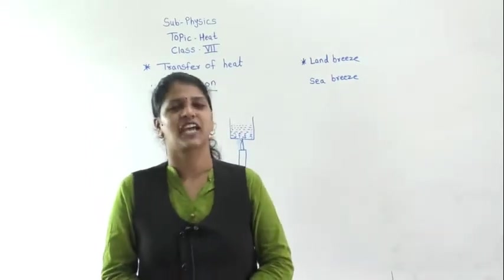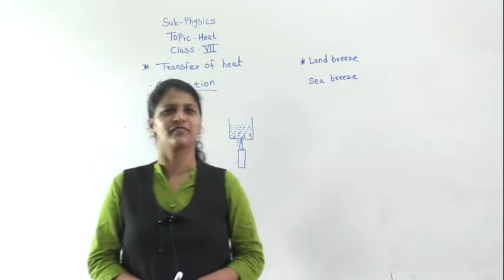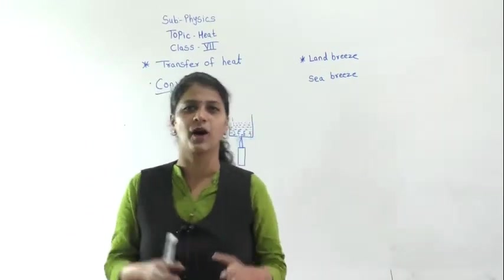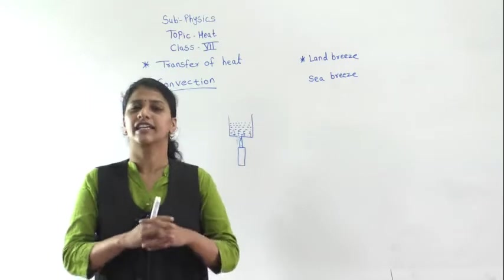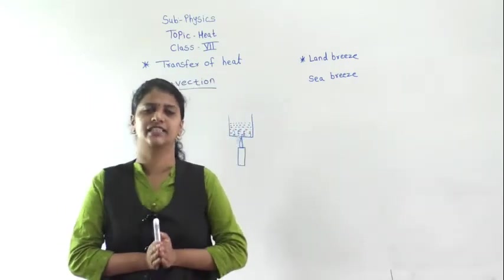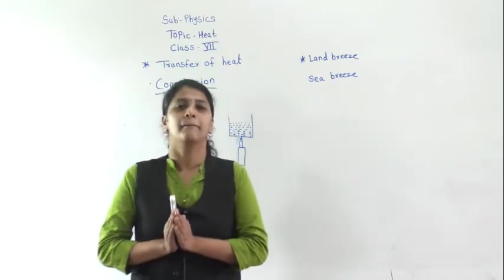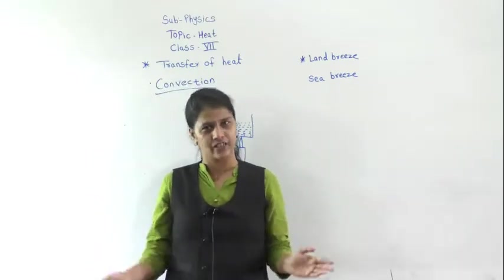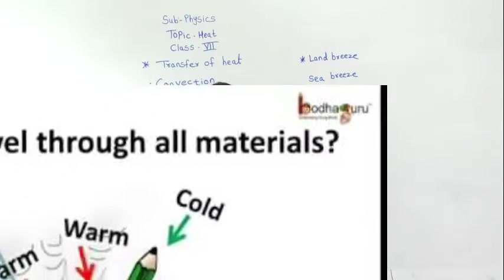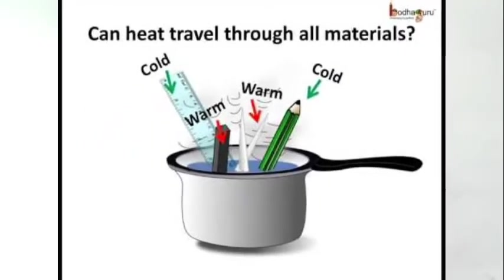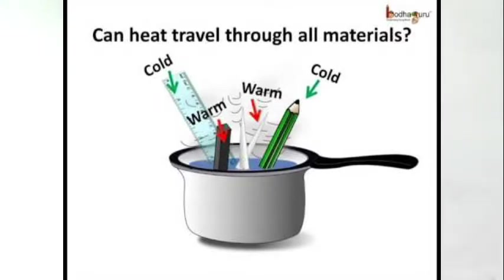Good morning, dear students. We are back with our physics lecture. In the last video, we discussed heat and the transfer of heat. I taught you one mode of heat transfer — conduction. We also discussed two types of conductors: good conductors and bad conductors. Bad conductors are also called insulators. For that, I told you to do one activity: in a hot picker, place a plastic scale and a knife, and you will see that the knife gets heated first.